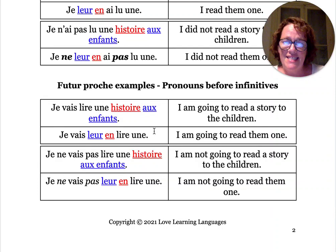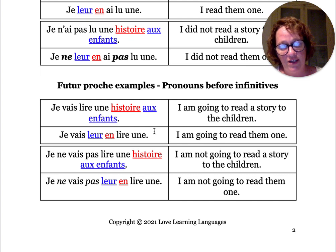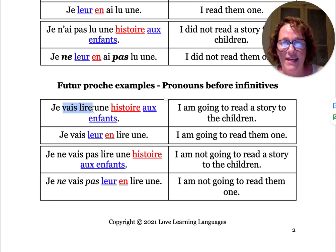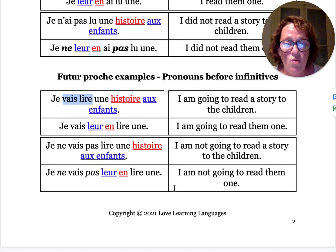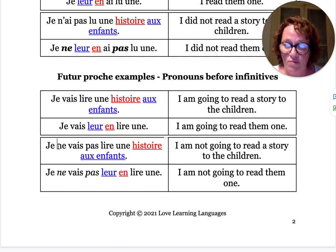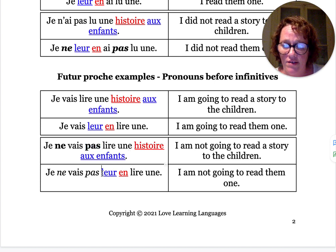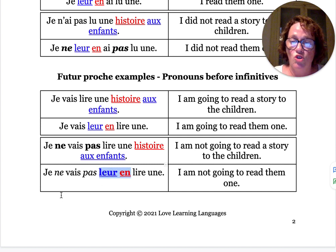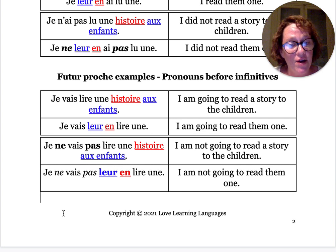Future proche: this time we put pronouns before the infinitive. Je vais lire une histoire aux enfants — I'm going to read a story to the children. In the future proche you have the verb aller followed by an infinitive. You've done this before with one pronoun — you put it before the infinitive. Do the same thing, just keep them in order. Je vais leur en lire une. To make this negative, it's not complicated — it's just the verb aller that is being negated and we keep our pronouns right before the infinitive: je ne vais pas leur en lire une.